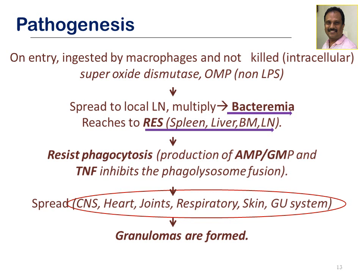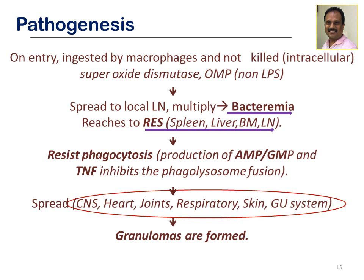In summary, these bacteria are intracellular, resist phagocytosis, multiply in local lymph nodes, produce primary bacteremia, enter the reticuloendothelial system — liver, spleen, bone marrow, lymph nodes — and after further multiplication re-enter the blood to reach various organs and produce granulomas.